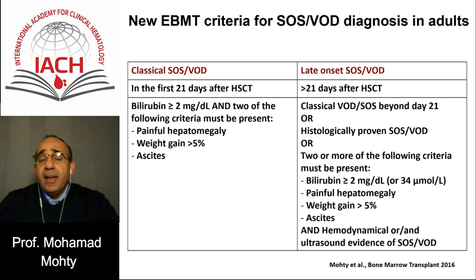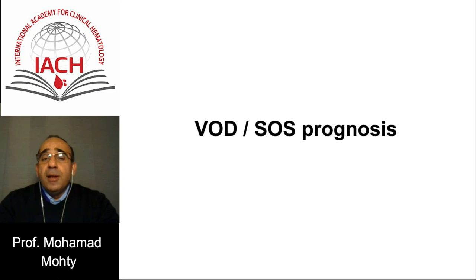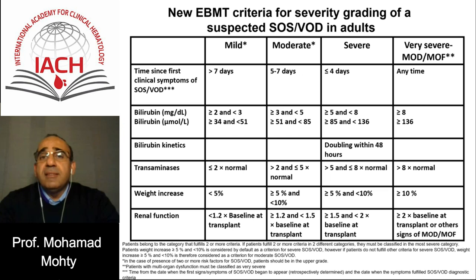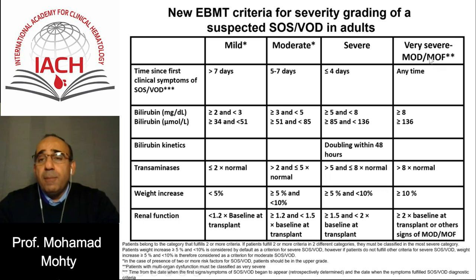It's crucial because the prognosis of VOD is very dismal when it comes to severe VOD. As part of the EBMT effort to push this field forward, we developed the EBMT criteria for severity grading of suspected VOD in adults — and similar criteria for children. We try to classify suspected VOD into mild, moderate, severe, and very severe when a patient experiences multi-organ dysfunction or multi-organ failure. We rely on the kinetics of symptoms, bilirubin levels, and bilirubin kinetics.